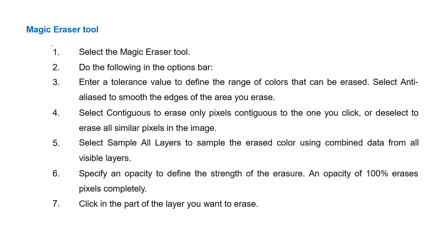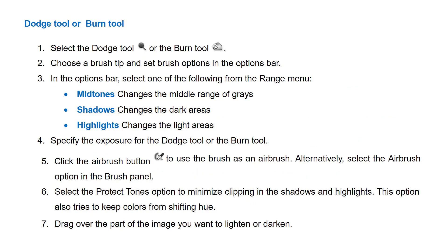Then the magic eraser tool — it has various properties and attributes you can change, such as tolerance, contiguity, and opacity, and you can work on various layers. Then the dodge tool and burn tool are used to lighten or darken an area respectively.